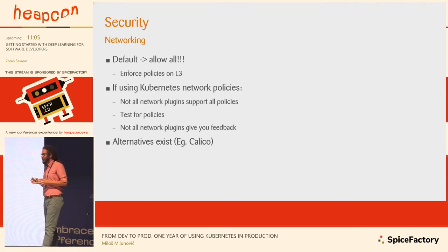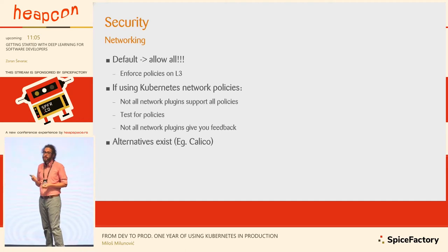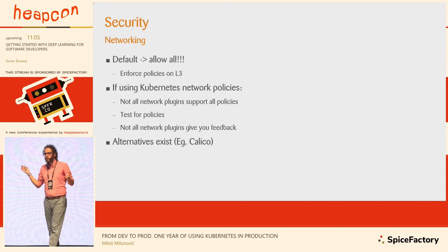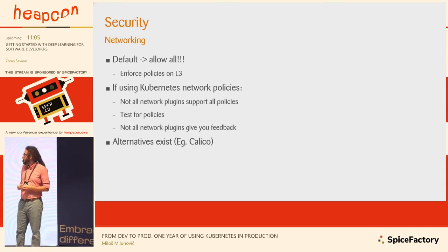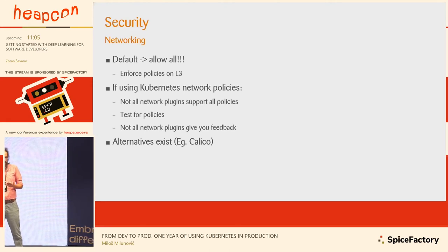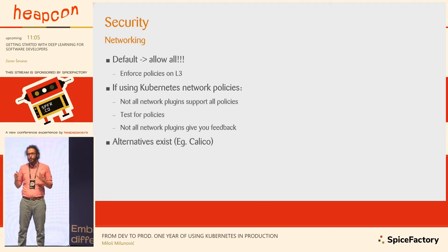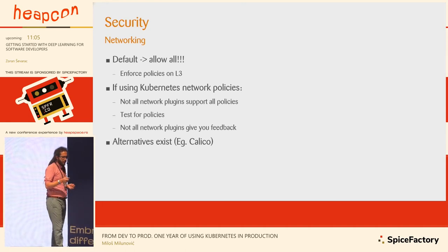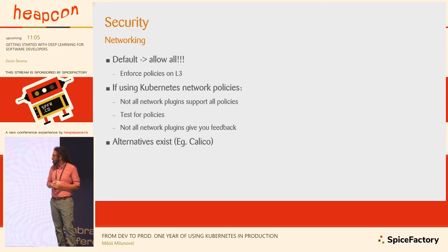Layer 7 networking might not be enough in your case. The default policy on layer 3 in Kubernetes is allow all. Kubernetes does support network policies, meaning you can say from this pod to this pod on the network layer there's no traffic, and it does this dynamically knowing where your pods are deployed. Important note: network policies in Kubernetes are quite new, so not all network plugins support all network policies, and virtually none of them report what's actually happening in your cluster. Important thing: test your policies — once you deploy a policy, test whether it's actually applied. Alternatives do exist; Calico started developing network policies even before Kubernetes did.